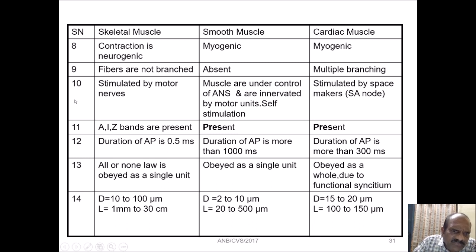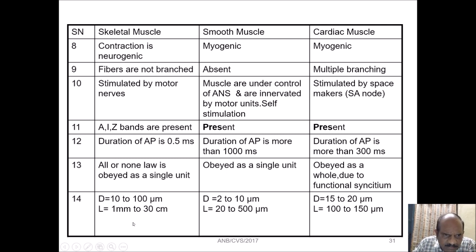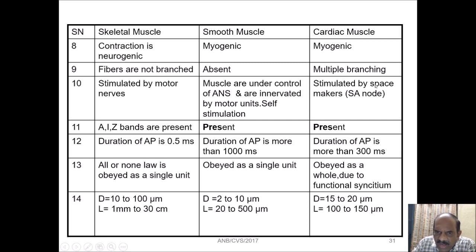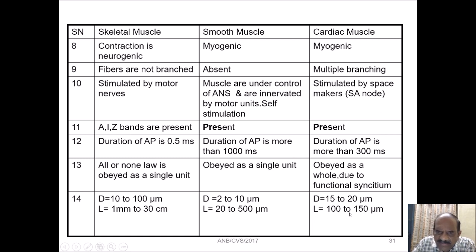Regarding structural dimensions: skeletal muscle diameter is about 10 to 100 micrometers and length varies from 1 millimeter to 30 centimeters. Smooth muscle diameter is 2 to 10 micrometers and length is about 20 to 500 micrometers. Cardiac muscle diameter is about 15 to 20 micrometers and its length is about 100 to 150 micrometers.